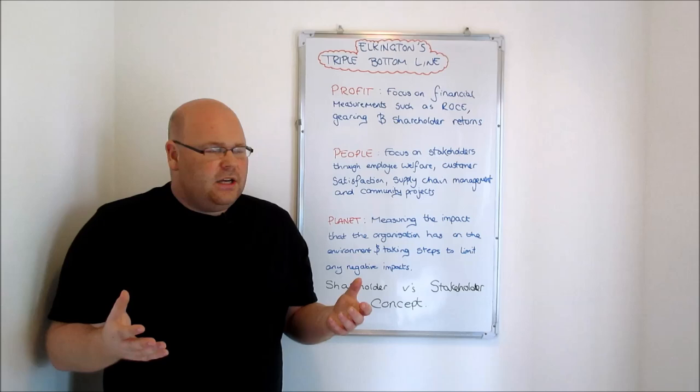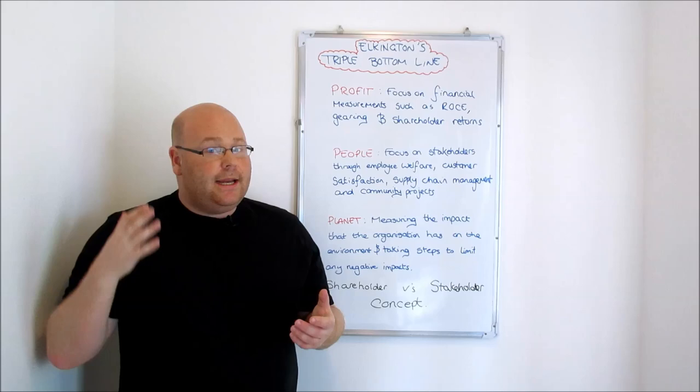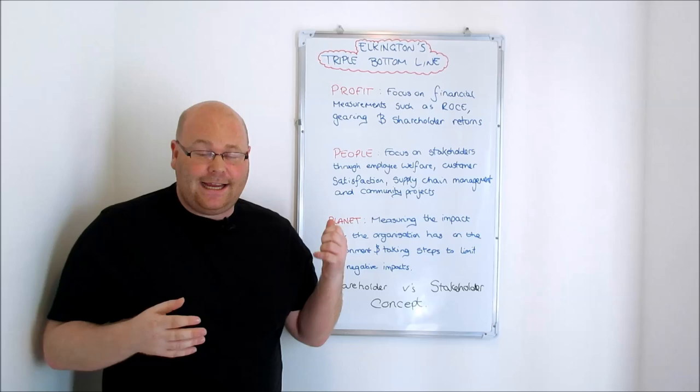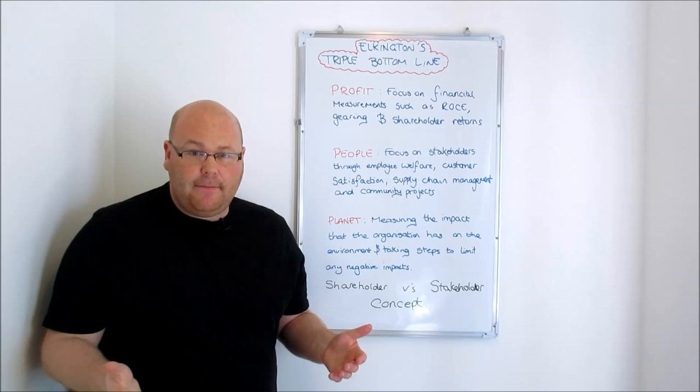Elkington noticed that at the time he was developing his theories in the 1990s, a growing band of consumers were becoming increasingly environmentally conscious and were beginning to scrutinize businesses far more in terms of their environmental impact. And so Elkington proposed that businesses need to make the environment - the planet - one of their key foci as well, so making sure that businesses are measuring their impact and coming up with strategies to reduce their impact on the planet.